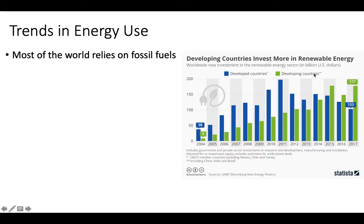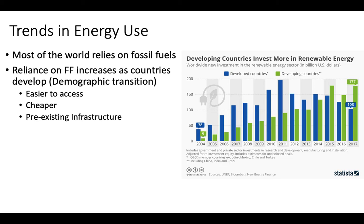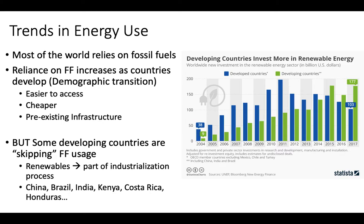Looking at renewable energy patterns, developing countries are actually investing in renewables at a faster rate than developed countries. This allows some developing countries to skip or dramatically shorten their reliance on fossil fuels during demographic transition — rather than building fossil fuel infrastructure, they're integrating renewables directly into their industrialization process. As a country develops and population grows, demand for cheap, accessible energy rises, and developed nations already have fossil fuel infrastructure built. But developing nations can leapfrog that dependence.